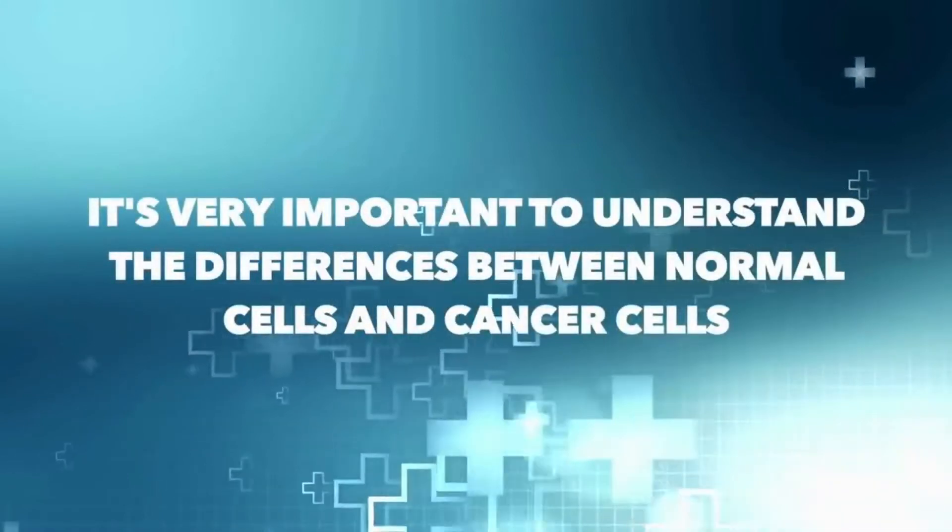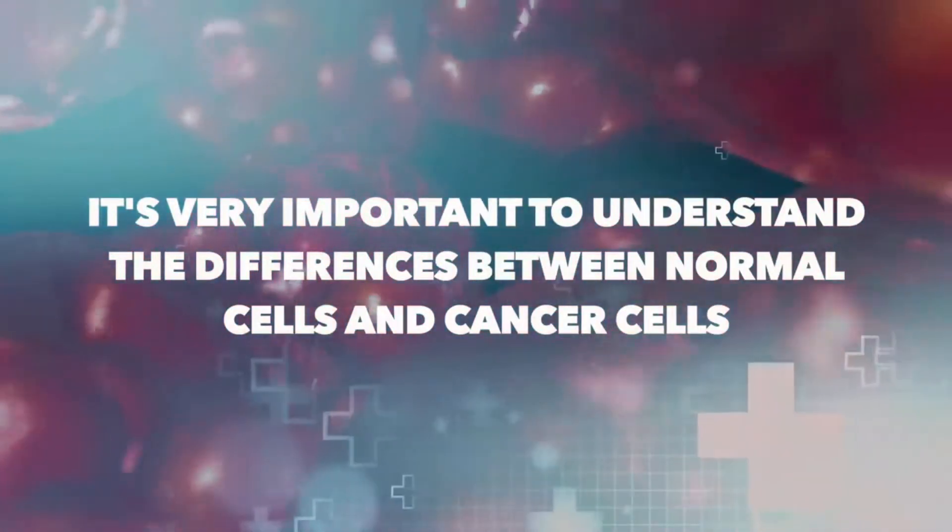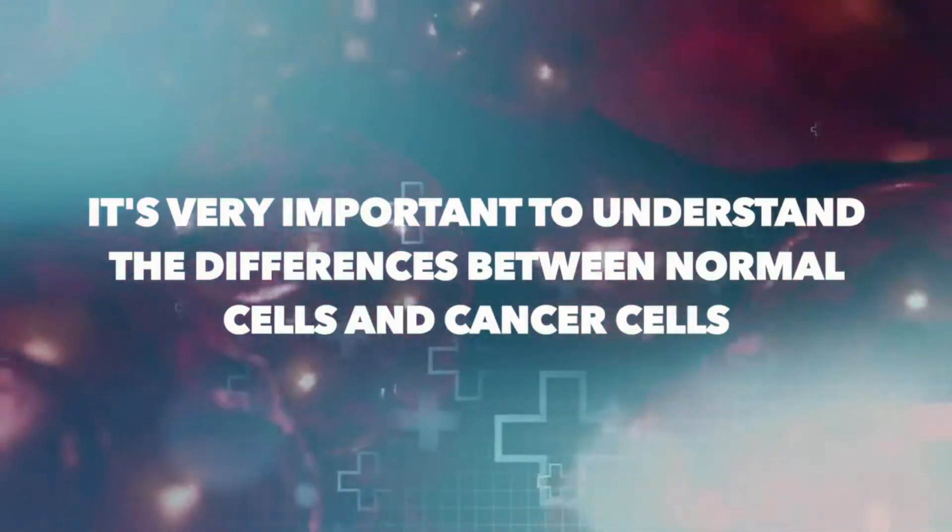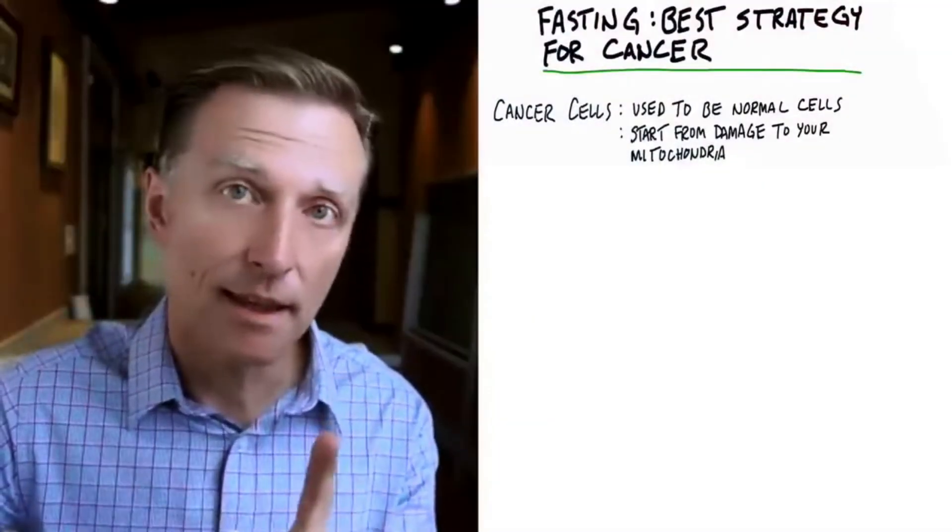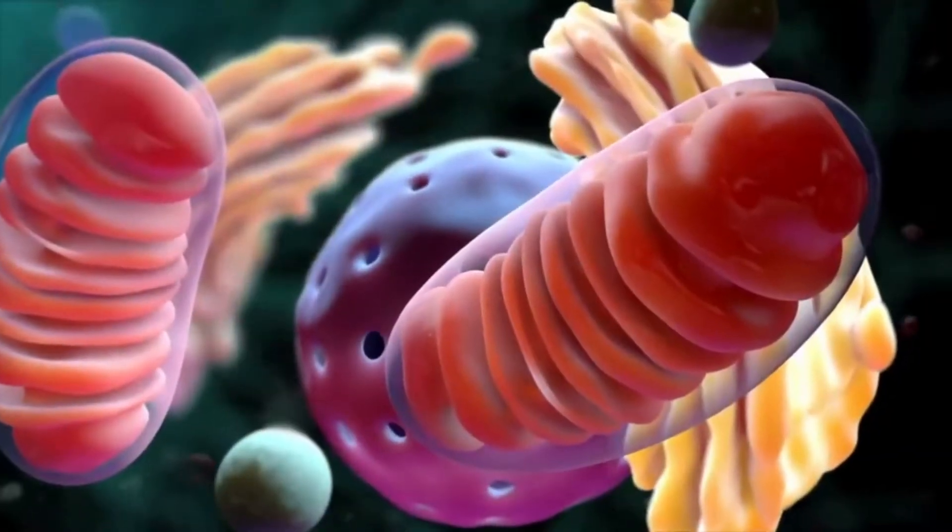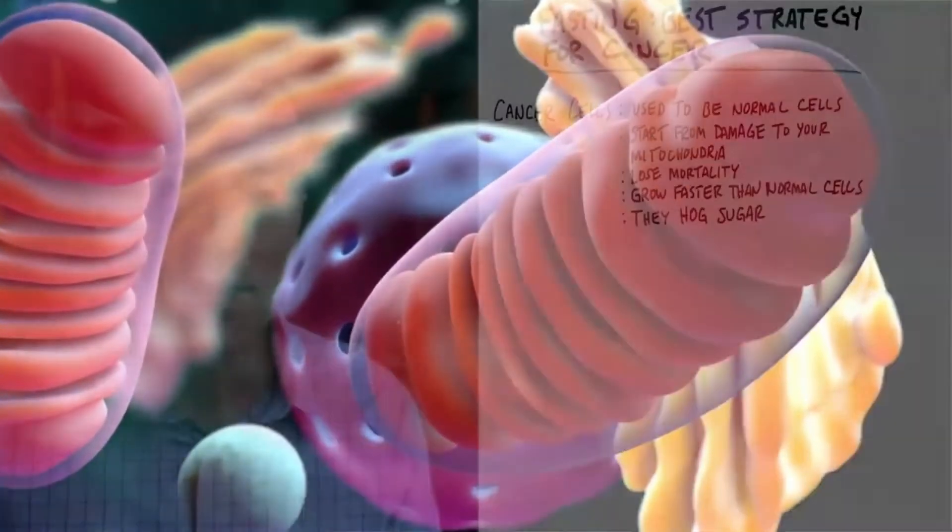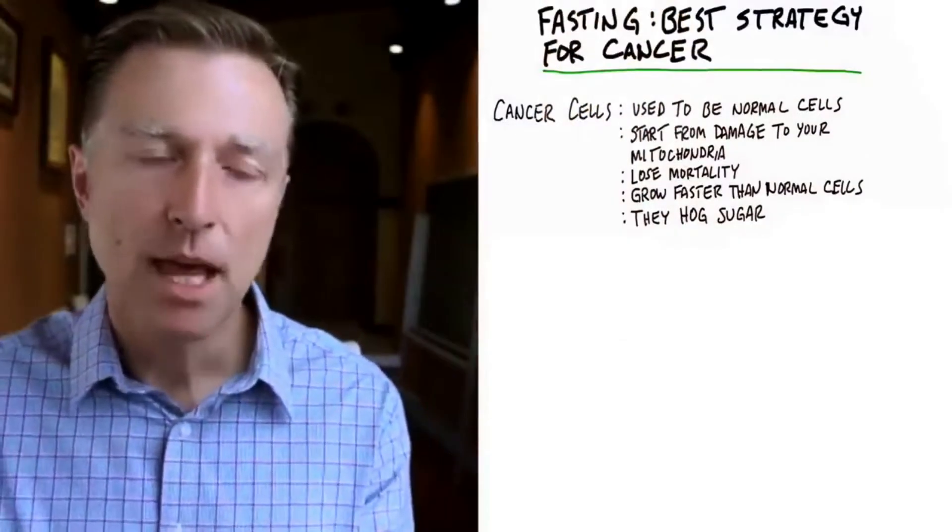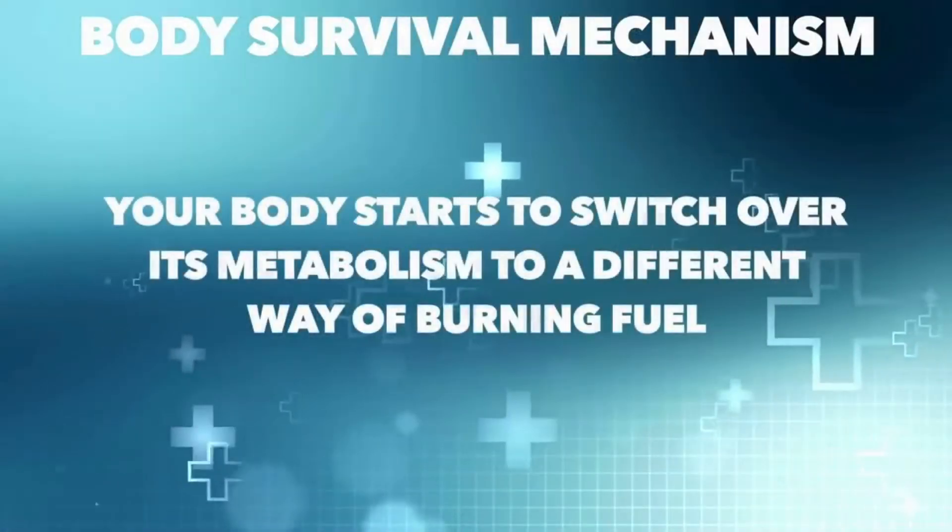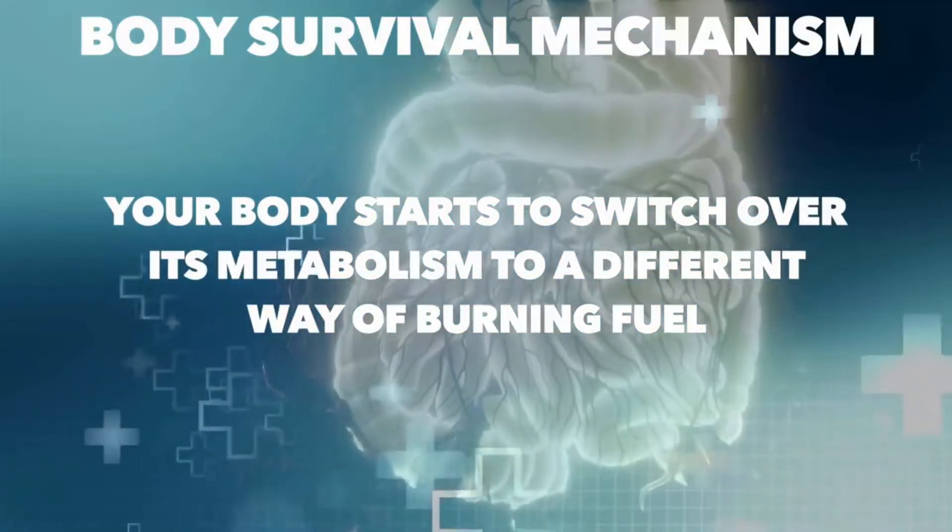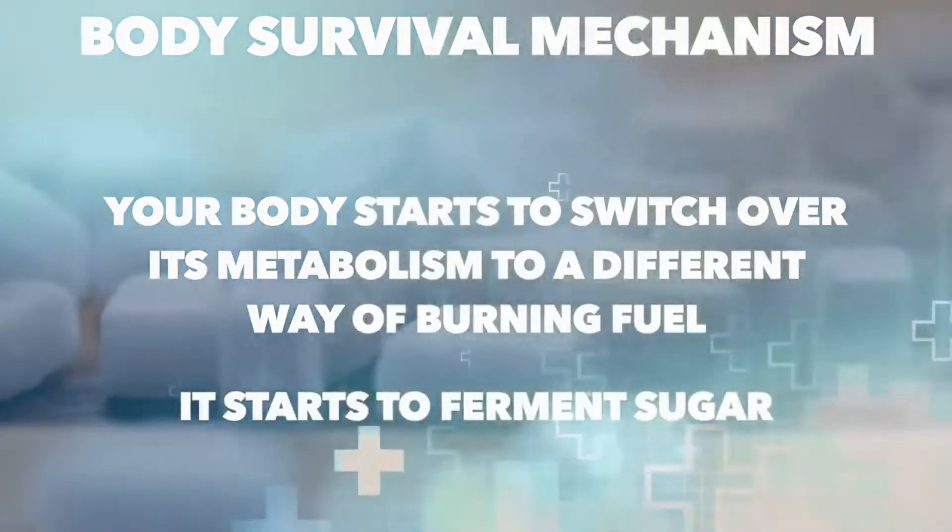So let's just dive right in. It's very important to understand some differences between normal cells and cancer cells. Cancer cells originate from normal cells. What happens is this: a certain thing in your cell becomes damaged, and that thing is called the mitochondria. The mitochondria is the energy factory of the cell. It produces all the energy for your body. And so after the mitochondria become damaged, the body, through an adaptive survival mechanism, starts to switch over its metabolism to a different way of burning fuel.